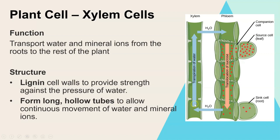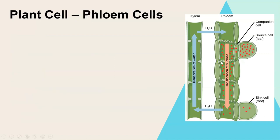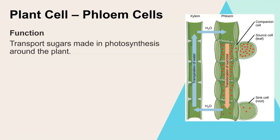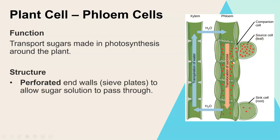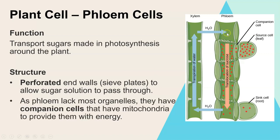Phloem cells are next to the xylem. The function of phloem cells is to transport sugars made in the leaf during photosynthesis around the plant. The structure has a perforated cell wall - meaning lots of holes - called a sieve plate, a bit like a sieve, which allows the sugar solution to transport around the plant. It's also fairly hollow inside like a hose pipe, apart from these sieve tube elements. Phloem cells have companion cells lining them - these help the phloem cell.